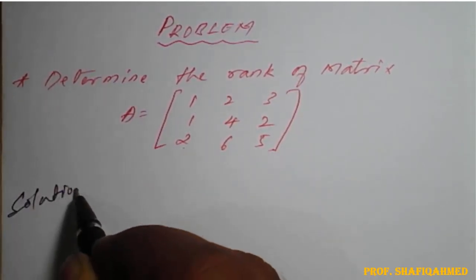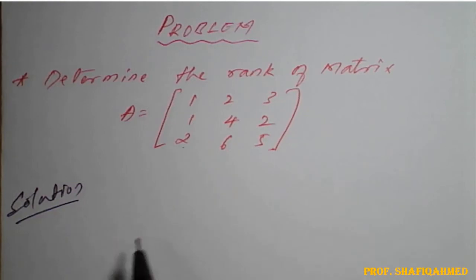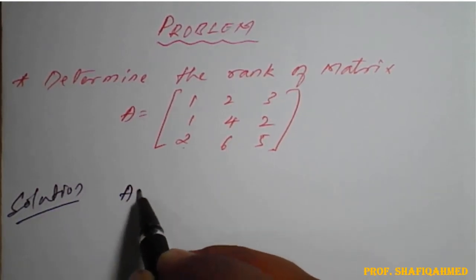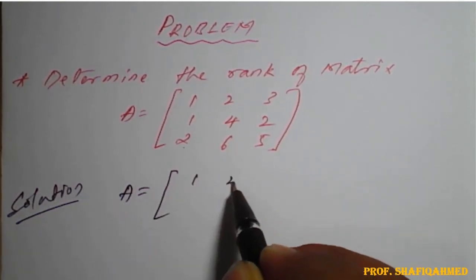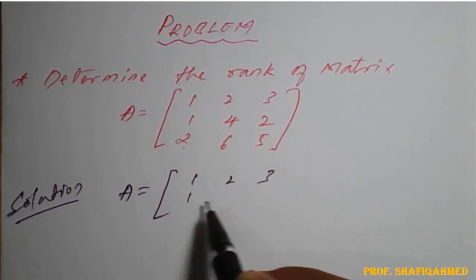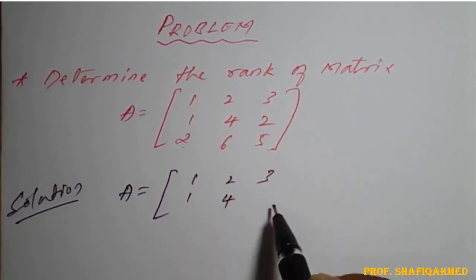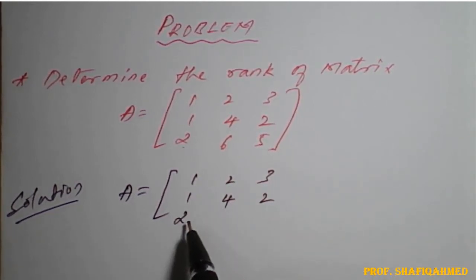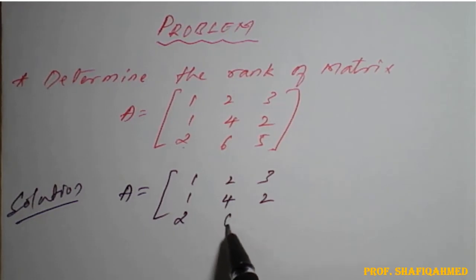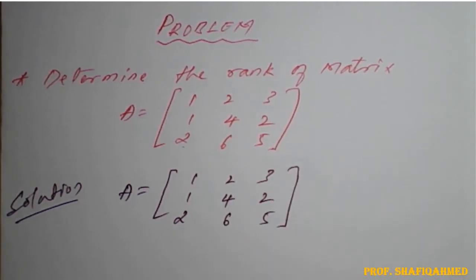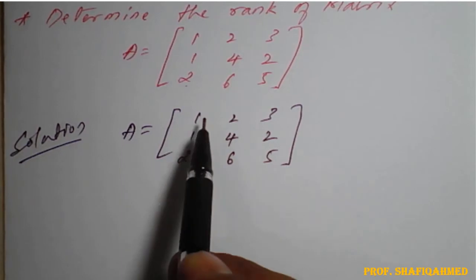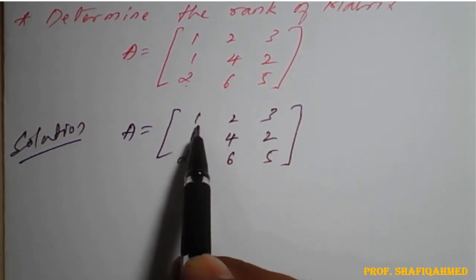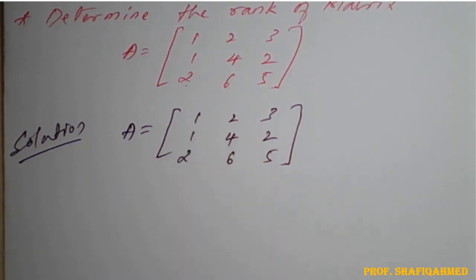Solution. The given matrix is taken as it is: matrix A equal to 1, 2, 3, 1, 4, 2, 2, 6, 5. The first row's first element is 1, so no need to interchange any rows or columns. The diagonal elements are 1, 4, 5. Below the diagonal elements, we need to make the elements 0.